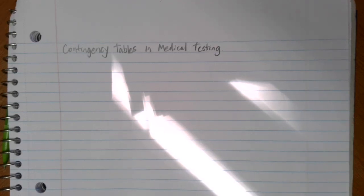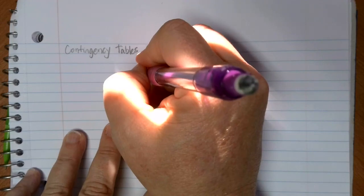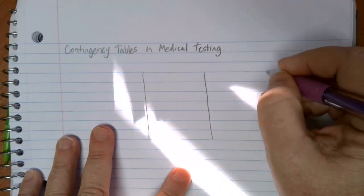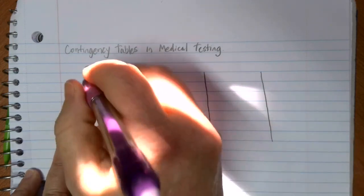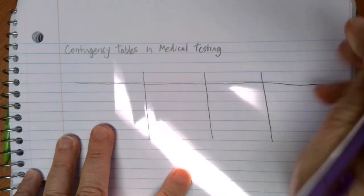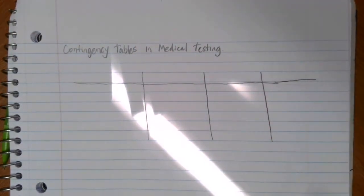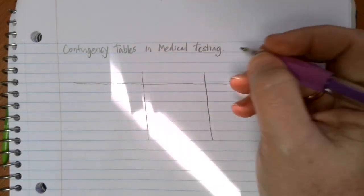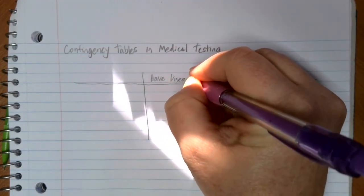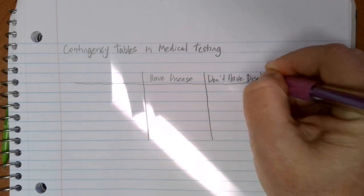One of the big uses where contingency tables come in handy is in medical testing. If we have a person with a disease and they go in to take a test to screen to see if they have that disease or not, the problem is that these medical tests and screenings aren't 100% perfect. So we want to have a way to quantify that and figure out a variety of probabilities. As we set up a contingency table, you're going to have some people that have a disease and some people that don't, and all of them are going to come in for some sort of a screening or test.